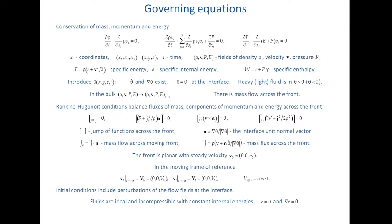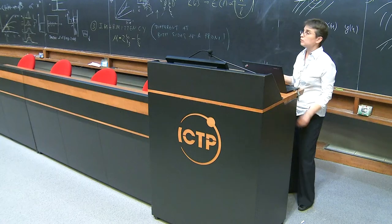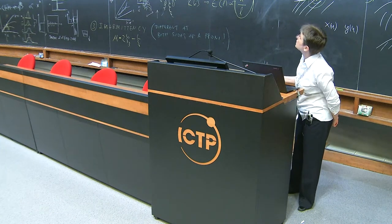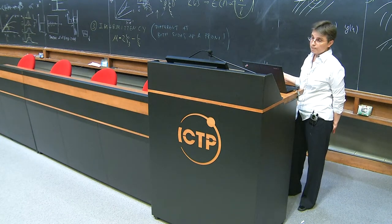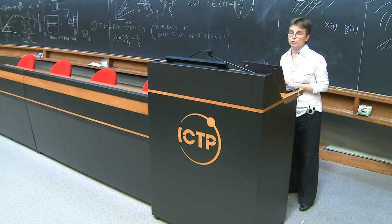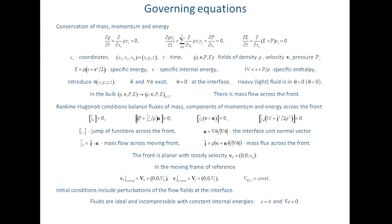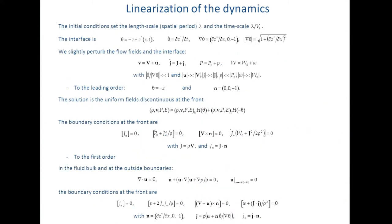The front is presumed to be planar and steady. In the moving frame of reference, there are the boundary conditions at the outside boundaries of the domain, and the initial conditions include perturbation of the flow fields at the interface. The fluids are ideal and incompressible, with constant internal energies. We may linearize this dynamics, consider small perturbations around the uniform flow fields, and reduce our Rankine-Hugoniot conditions to zero-order terms, as well as to the first-order terms, which include conditions for the velocities in the bulk.